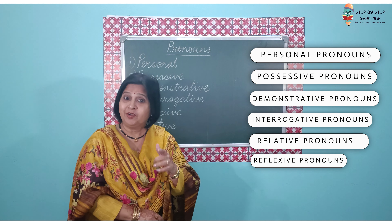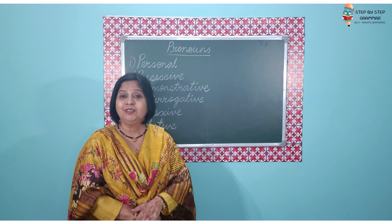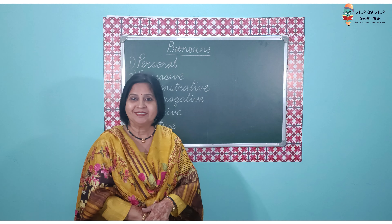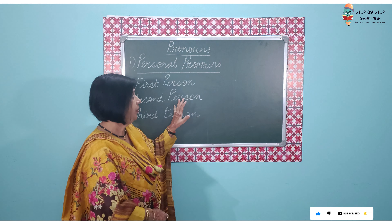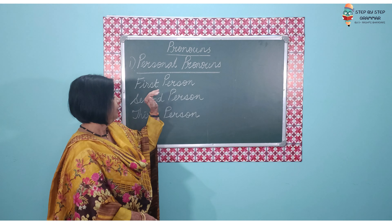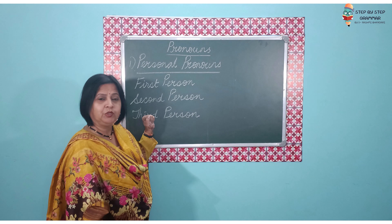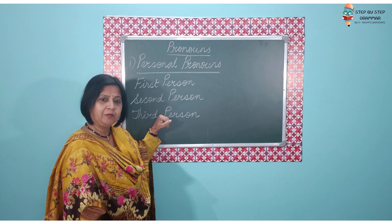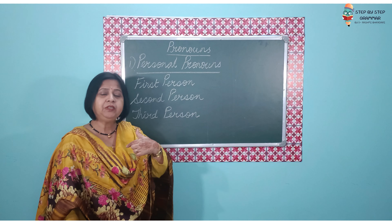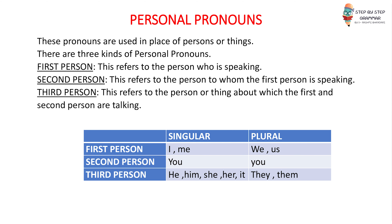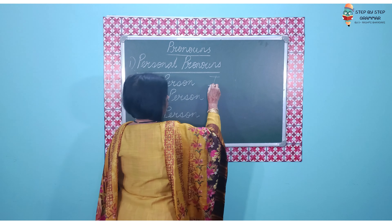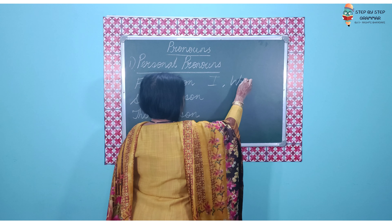Let us look at the first kind of pronouns and that is personal pronouns. Personal pronouns are used in place of persons, animals, or things. Here we have subcategories — three types of personal pronouns. We call them the first person, the second person, and the third person. First person means who is speaking: I, or if more than one, we. So 'we' or 'I' — we are the ones who are speaking.